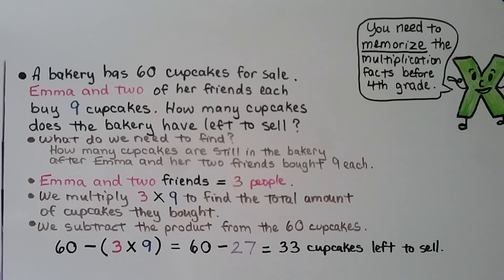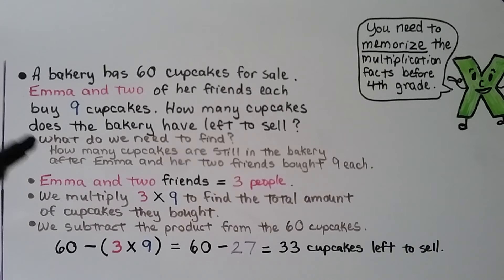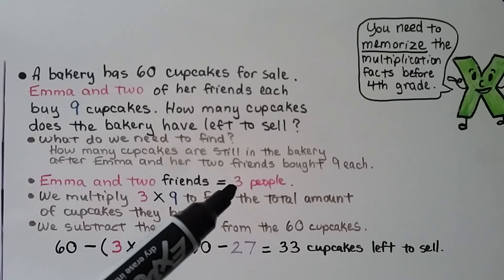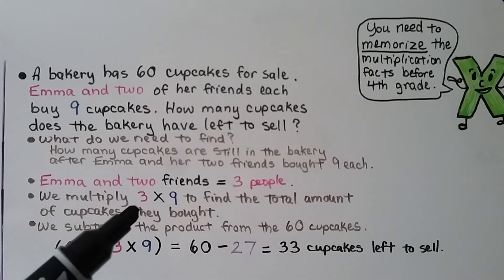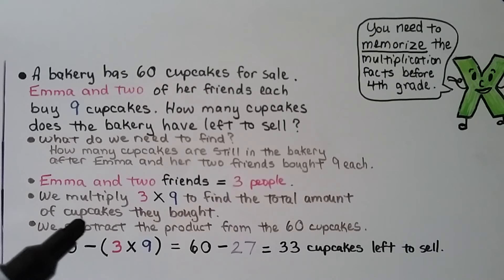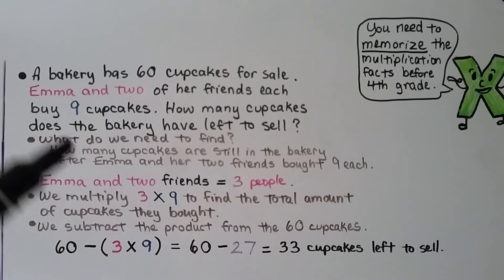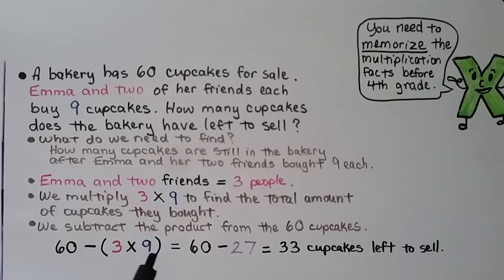A bakery has 60 cupcakes for sale. Emma and 2 of her friends each buy 9 cupcakes. We need to find how many cupcakes the bakery has left. Emma and 2 friends is 3 people, each buying 9, so we multiply 3 times 9 to get the total bought. 3 times 9 equals 27. Then 60 minus 27 equals 33 cupcakes left for the bakery to sell.